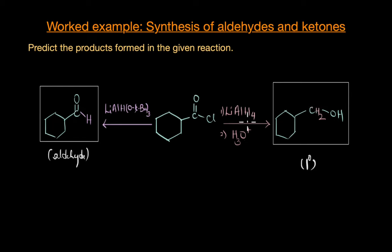In the previous video we saw the reaction of acid chloride with two different reagents: lithium aluminium hydride and the much bulkier, sterically hindered lithium tri-tert-butoxy aluminium hydride, and we saw how we got two different products depending on the reactivity of our reagents.